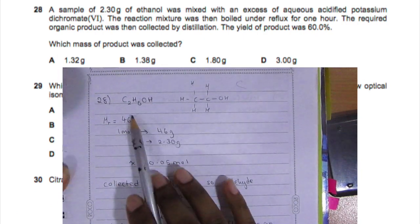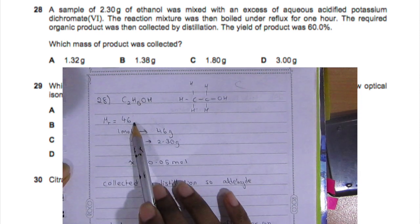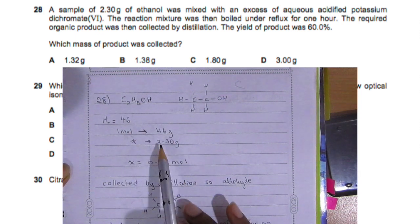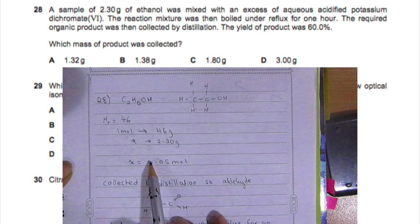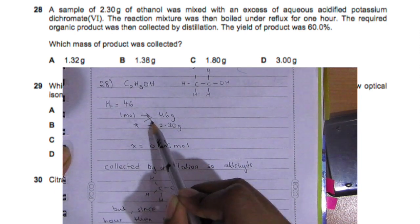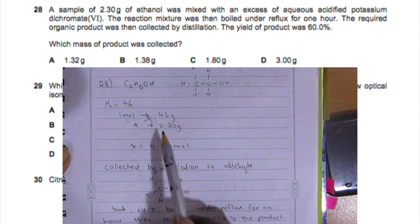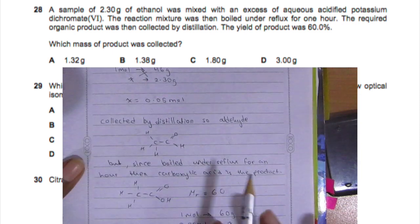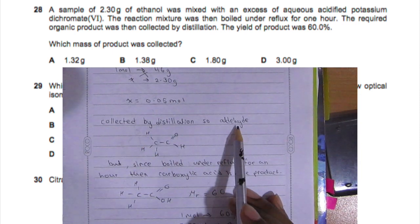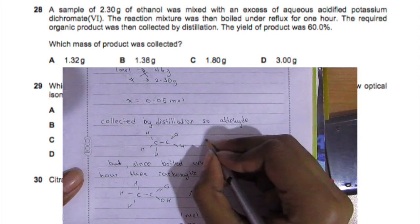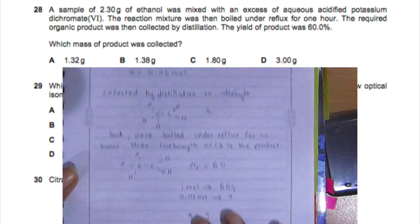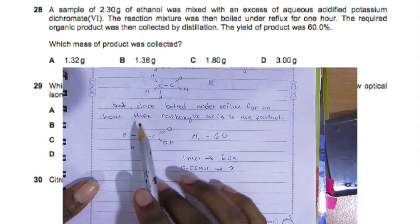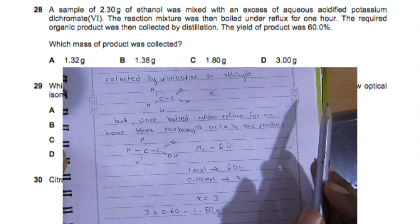Question 28. So we have the ethanol and the MR is 46. So one mole is 46 grams - so how many moles is 2.30 grams? You're going to cross multiply, so it's going to be 2.30 divided by 46, which gives you 0.05 moles.